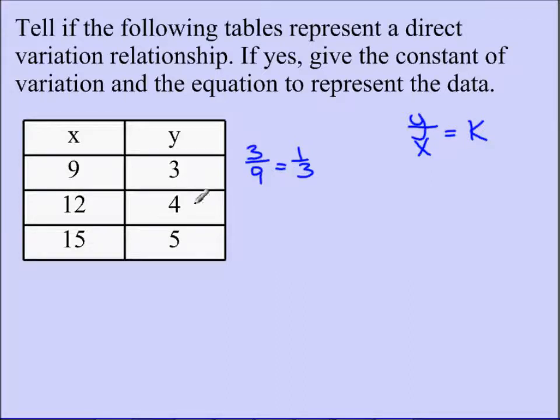Y is 4, x is 12, which also reduces down to 1 third. So far, it looks like I have a direct variation relationship. So I'm going to do it again.